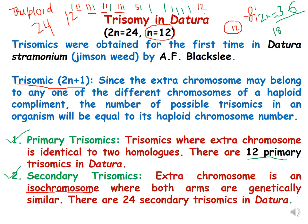In secondary trisomics, the extra chromosome is an isochromosome where both arms are genetically similar. Since one chromosome has an upper arm and a lower arm, two isochromosomes are possible from one chromosome. Since Datura has a gametic number of 12, there are 24 kinds of secondary trisomics possible in Datura.